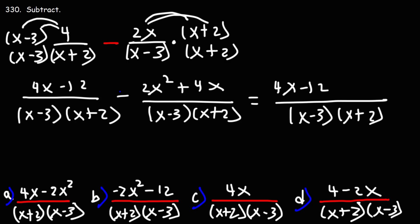And this is the part where you have to be careful. This negative sign is distributed to the 2x squared and the 4x, so it's going to be minus 2x squared minus 4x.